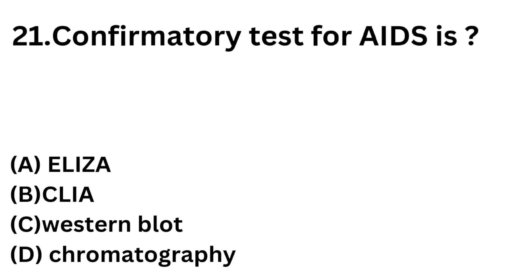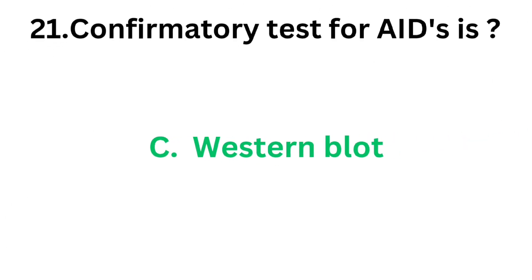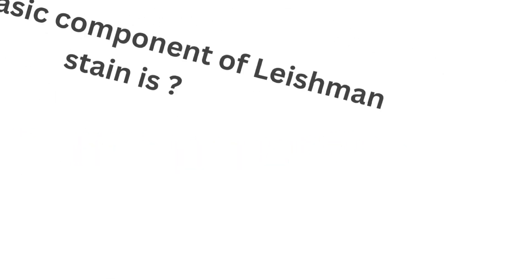Question number 21: Confirmatory test for AIDS. Option A: ELISA, that is enzyme-linked immunosorbent assay. Option B: CLIA, or chemiluminescent immunoassay. Option C: Western blot. Option D: Chromatography. All these are used for detecting AIDS, but the confirmatory test for AIDS is Option C, Western blot. Western blot test is used for the confirmation of AIDS.